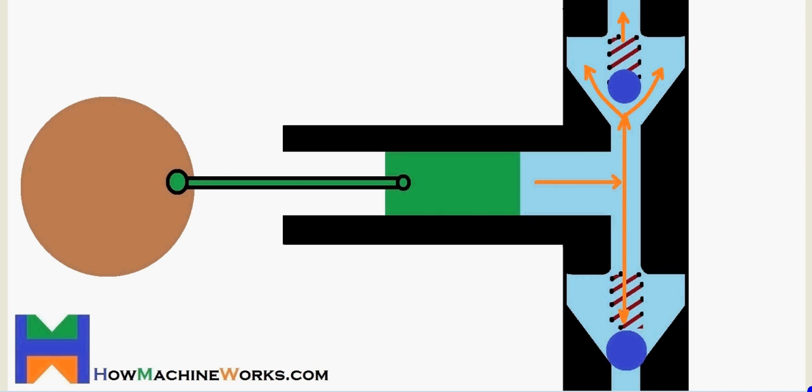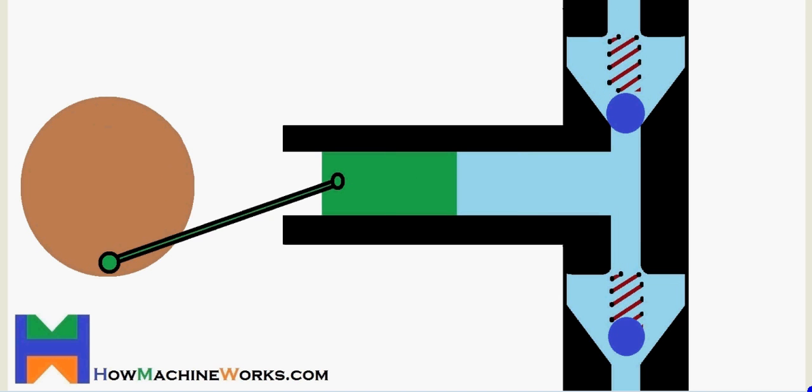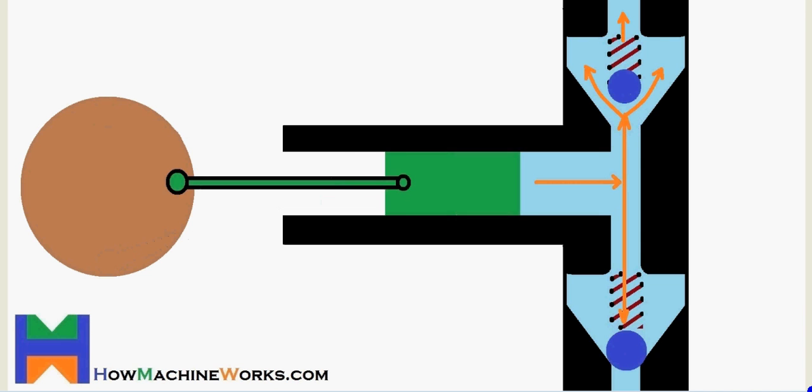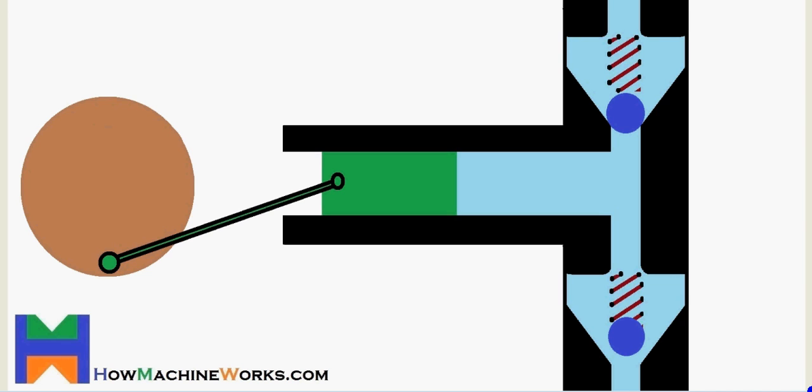This is called a positive displacement pump because whenever it rotates, there is a discharge. Now further, as the rotor rotates, the plunger moves towards the backward direction. A low pressure is created at this point and that creates a suction.